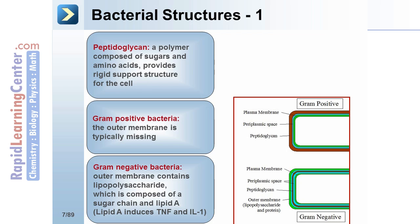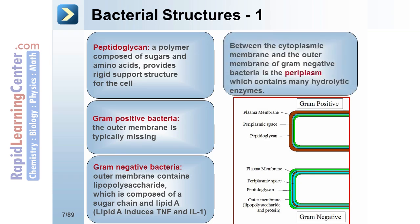In gram-negative bacteria, there is an outer membrane which contains lipopolysaccharide, an endotoxin. Lipopolysaccharide is composed of a sugar chain and lipid A. Lipid A induces TNF and interleukin-1. The cytoplasmic membrane is composed of lipids and proteins and contains enzymes used for transport and oxidative phosphorylation.